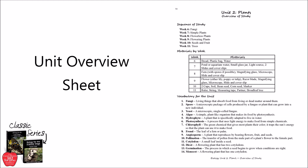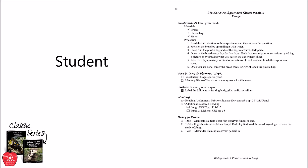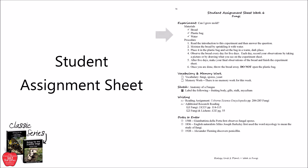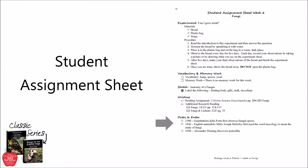Following the unit overview sheet, you will find the weekly lesson information. This begins with the student assignment sheet, which gives the experiment materials and procedure, the vocabulary memory work assignments, details for the sketch assignment, encyclopedia pages to read for the writing assignment, and dates to enter on the timeline. This page can also be found in the student guide so that you can begin to foster some independent learning in your students.